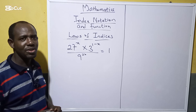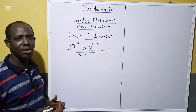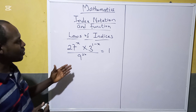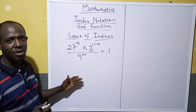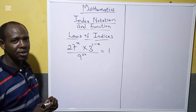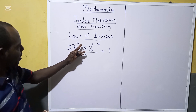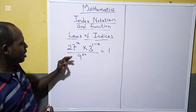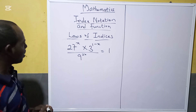Hi viewers, welcome once again to my channel. I will continue our topic on laws of indices. In this video I want to solve an example question using the laws of indices that we discussed in the previous video. Now take a look at this question: 27 raised to the power x, multiplied by 3 raised to the power 1 minus x, divided by 9 raised to the power 2x, equals 1. How will you go about this?